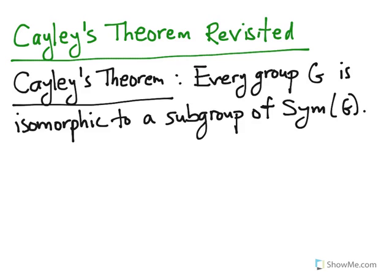Cayley's Theorem says that every group G is isomorphic to a subgroup of the symmetric group on G. Remember the symmetric group, sym of G, is just the group of all bijections from G to itself.